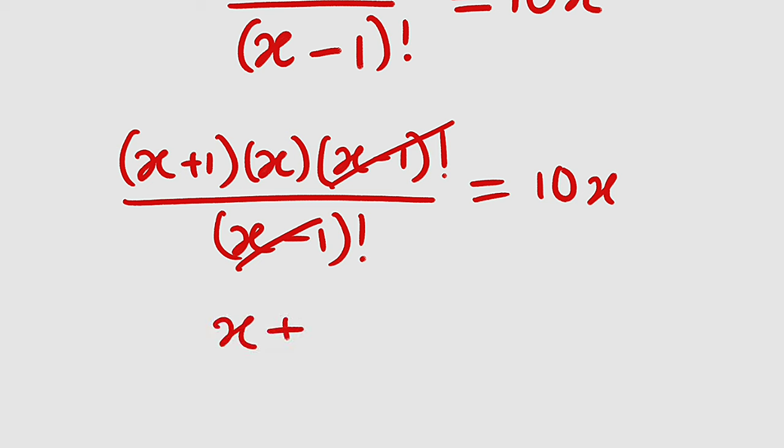(x+1) multiplied by x equal to 10x. We can now divide both sides by x since x is not equal to 0.